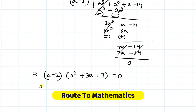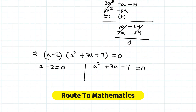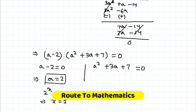The factors of the cubic are (a - 2)(a² + 3a + 7) = 0. From a - 2 = 0, we get a = 2, meaning 2^x = 2. Since the bases are the same, we equate the powers and get x = 1 as one solution.